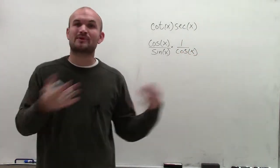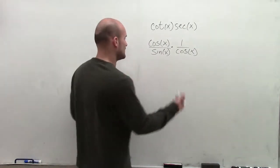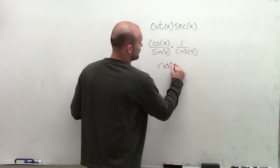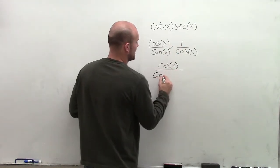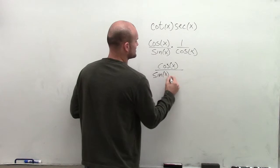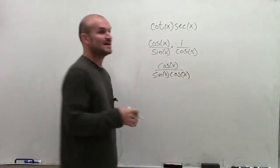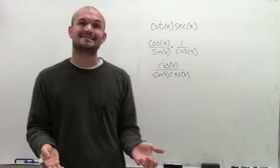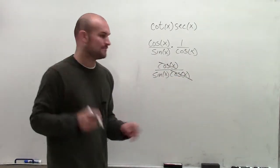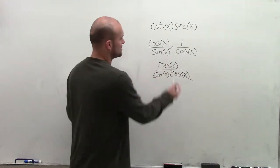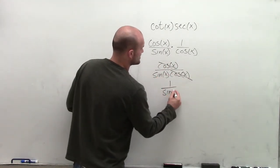The reason why it's so important to rewrite them is because when I look at this problem, I notice that if I multiply this out — cosine of x times 1 is just cosine of x, and then I'll have sine of x times cosine of x as my denominator. Now since I have a cosine of x in both the numerator and the denominator, these are going to divide out into 1, leaving 1 over sine of x.